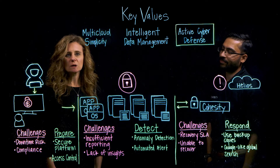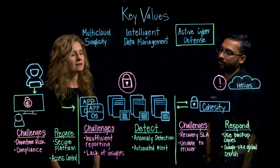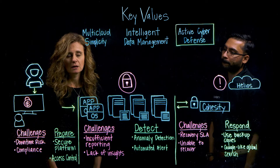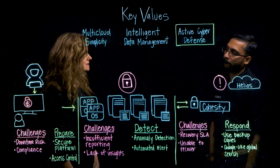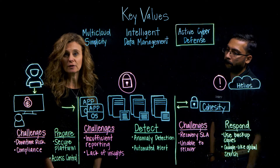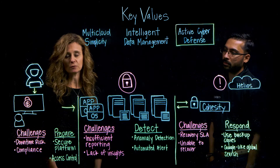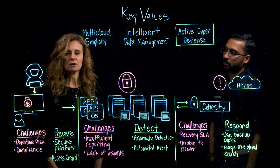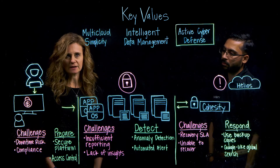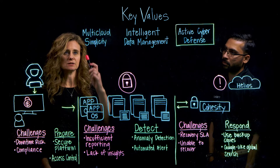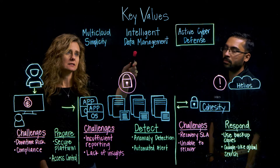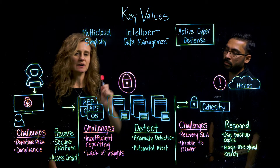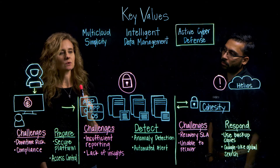What we're going to talk about today revolves around what you know as files and objects, but we're going to talk about it in the form of Cohesity Smart Files — that's what we refer to our file and object platform as. We gave it the name Smart Files because it is more than files and objects. Smart Files is multi-cloud simplicity, intelligent data management, and even has active cyber defense built right into the platform.